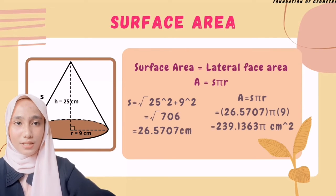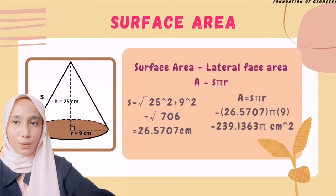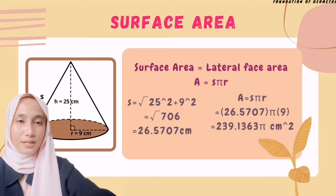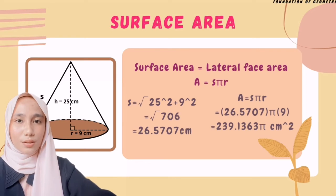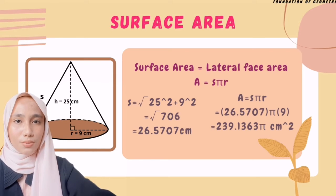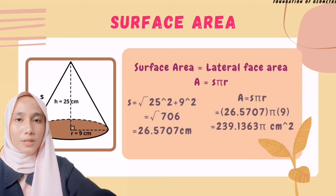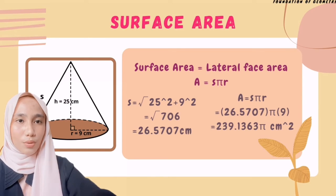We need to find the surface area of the cone. The surface area of a cone equals slant height × π × radius. First, we need to find the slant height using the Pythagorean theorem: s = √(25² + 9²) = √(625 + 81) = √706 = 26.5707 cm. So the surface area = 26.5707 × π × 9 = 239.1363π cm².